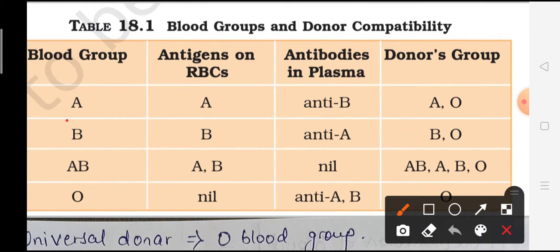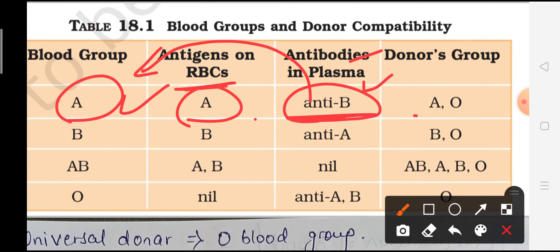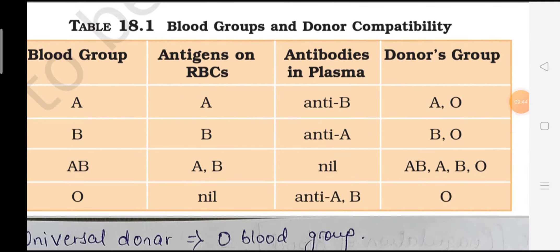Starting with blood group A: the antigen present on the RBC surface will be antigen A. Since antigen A is present, the antibody formed will be against B. Therefore, a person with blood group B cannot donate blood to a person with blood group A, because the antibodies present in the plasma of the A group individual will kill the B blood group cells. So for blood group A, the donor can be either A blood group or O blood group.